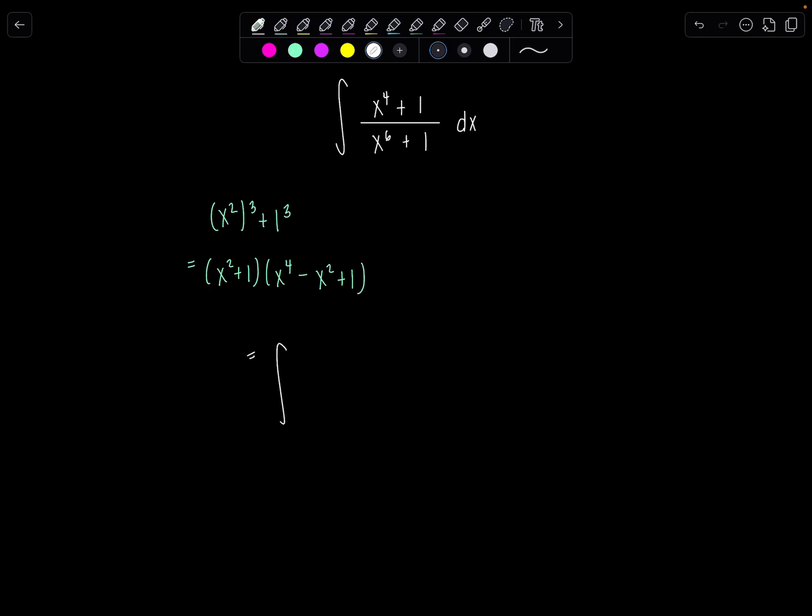So let me rewrite my integral now as x to the fourth plus one over this lovely factor denominator. At this point, no U sub will work out nicely. Because if you're thinking to let U be x squared, which I did in a previous problem that was a little different, there is no nice DU to get absorbed here.